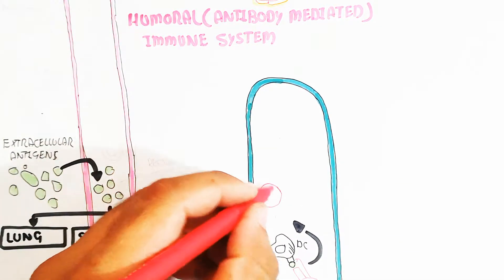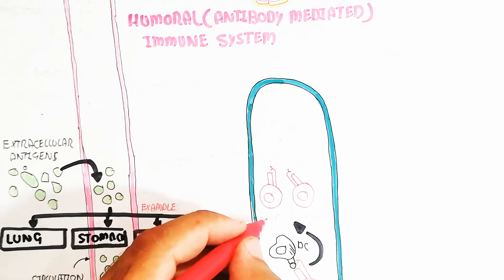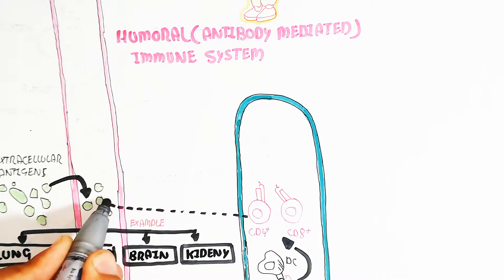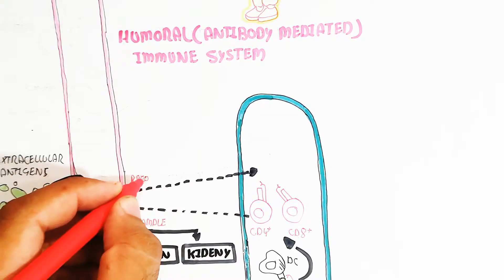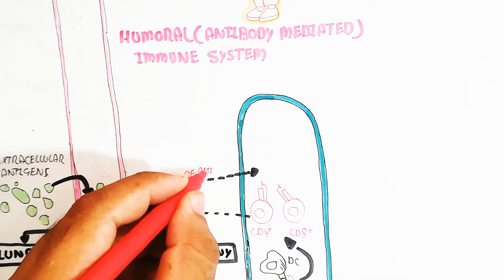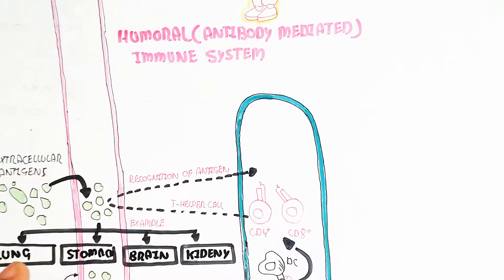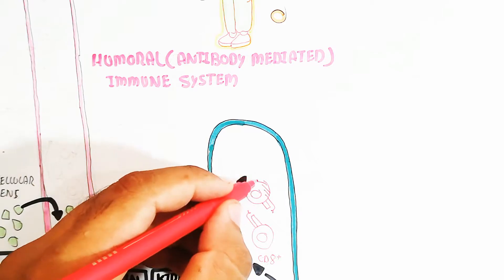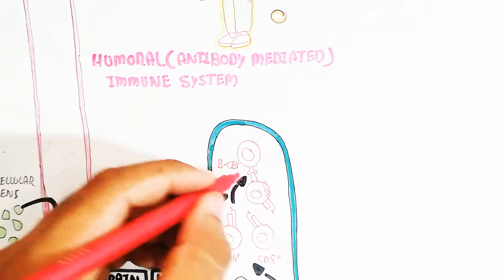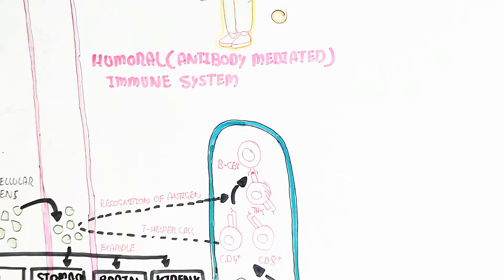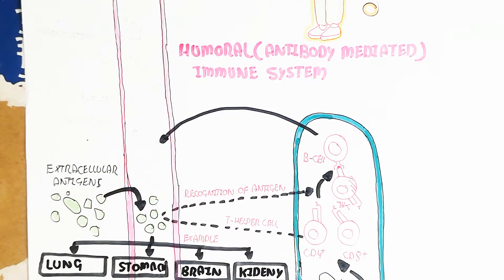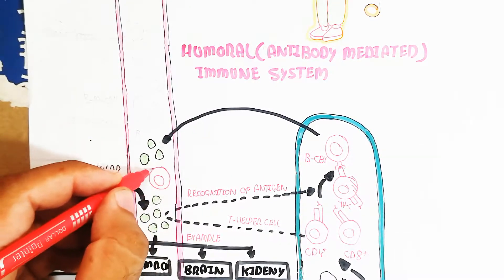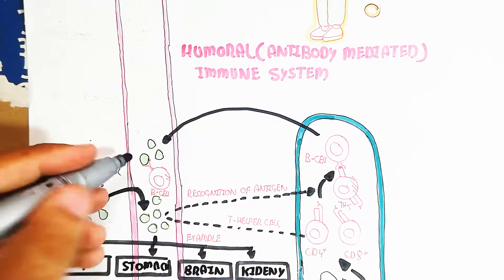The naive T cell recognizes the antigen through the dendritic cell when it enters the lymphatic system. After this, the naive T cell proliferates into CD4 T helper cells and CD8 cytotoxic T cells. The T helper cell helps the B cell recognize the antigen, and the T helper cell also enters the circulatory system for antigen recognition.